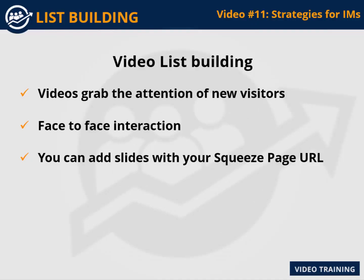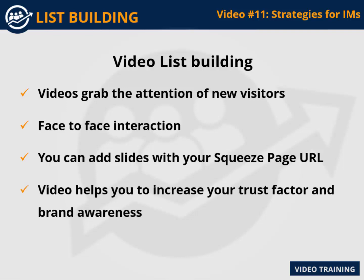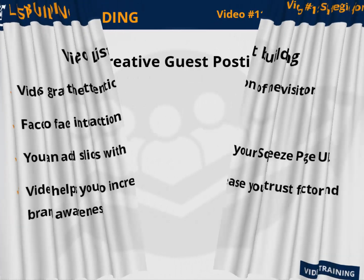You can add slides at the beginning and end that have the URL of your squeeze page or landing page. Make use of a call to action in your video — you could urge viewers to join your channel and RSS, and link your opt-in form to your YouTube channel page. Video helps you increase your trust factor and brand awareness and tends to get people to purchase from you. You can create videos to solve their problems instead of answering questions in text format.